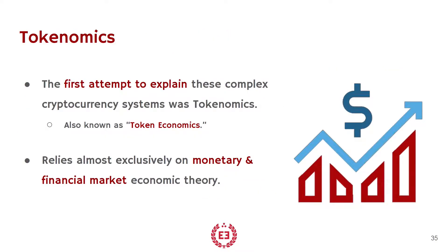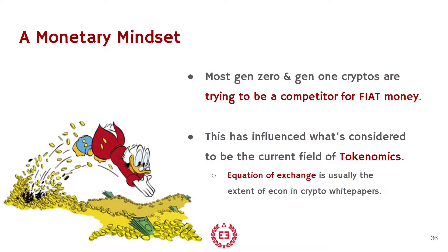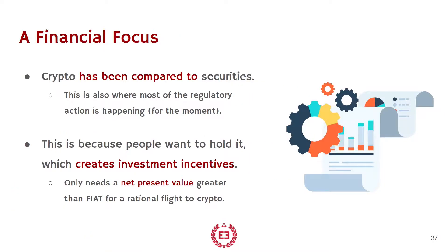This is why tokenomics emerged — in an attempt to explain these complex systems that have governance, a market, humans, and a technology stack. It's also known as token economics, but it is pretty much exclusively monetary and financial market theory, and that's a problem because those are only subsections of economic theory overall. The monetary mindset in particular — generation zero and generation one — were almost all trying to be competitors to fiat money, which influenced early tokenomics because it is almost exclusively about the equation of exchange and the quantity theory of money. Within a crypto white paper, you might see a net present value calculation, but it's not really a lot of economics — it's using one piece from one school of thought about one part of the economy.